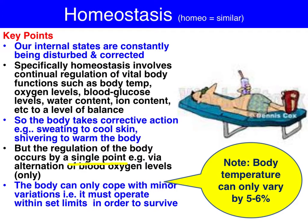Homeostasis involves minor variations in order to keep your physiological functioning within narrow set limits. For instance, our body temperature — if it increased by 15%, we'd get organ meltdown. If your body temperature decreased by 15%, we'd have potentially fatal hypothermia.